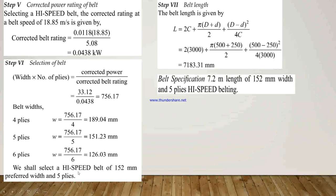From the alternative solutions, we select a high speed belt of 150 mm preferred width with 5 plies. The belt length is given by: L is equal to 2c plus pi times (capital D plus d) divided by 2 plus (capital D minus d) squared divided by 4c. Putting in all values, L is equal to 7183.31 mm. The final belt specifications are: length 7.2 m, width 152 mm, 5 plies, high speed belt. Thank you.